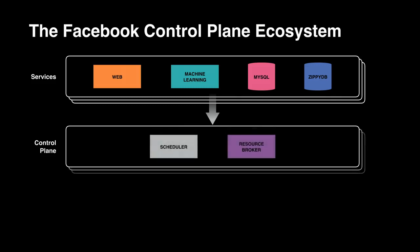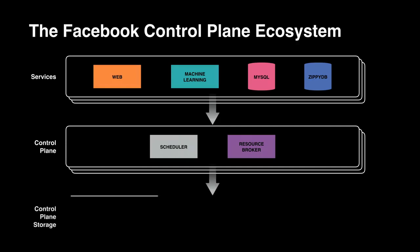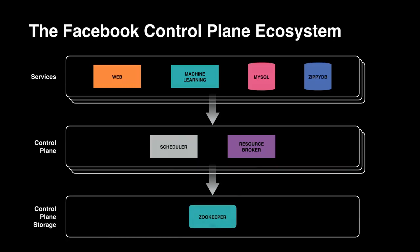Think of the control plane like cluster schedulers, resource allocators. Where there are thousands of services at the top level, there are fewer services on the control plane, but they're super vitally important. They also need to store their data persistently. Here's the bedrock of your house: control plane storage, which is storing the metadata for these control plane services.